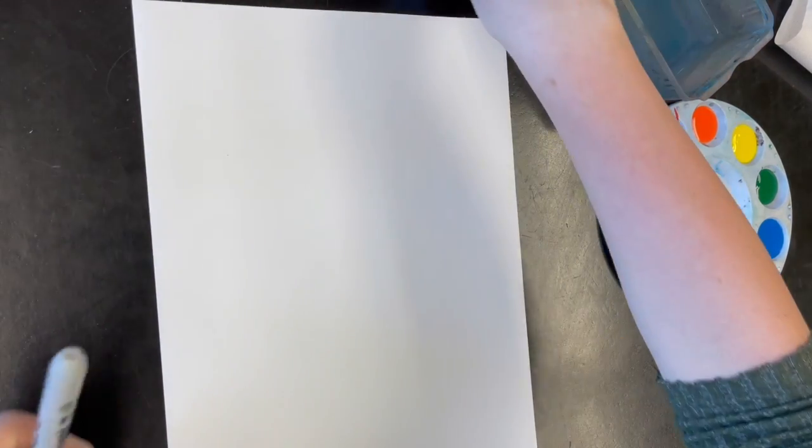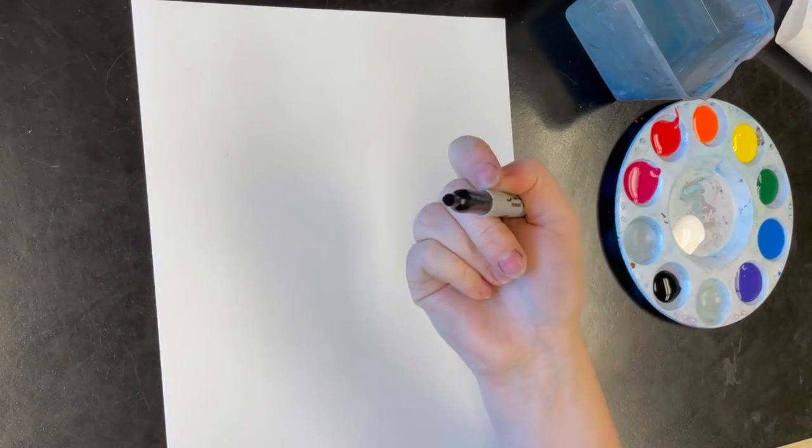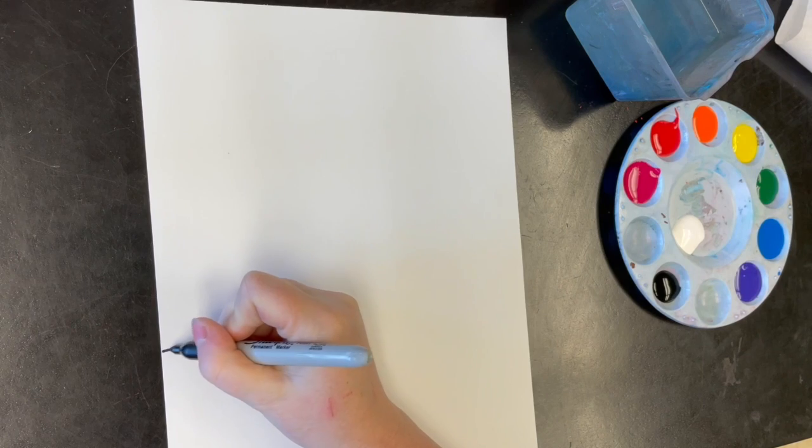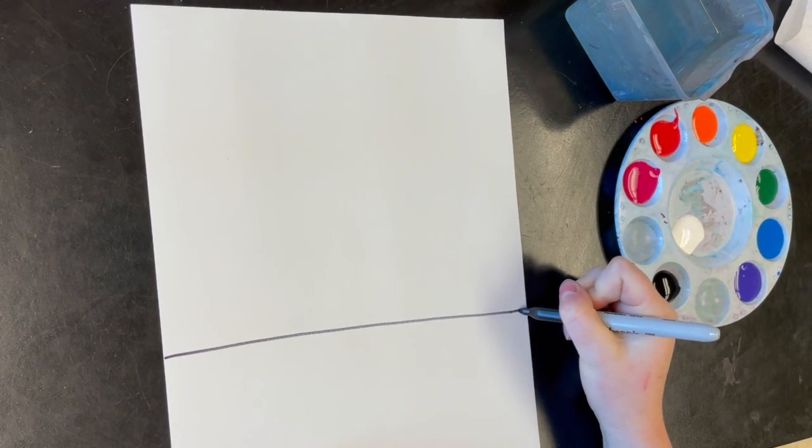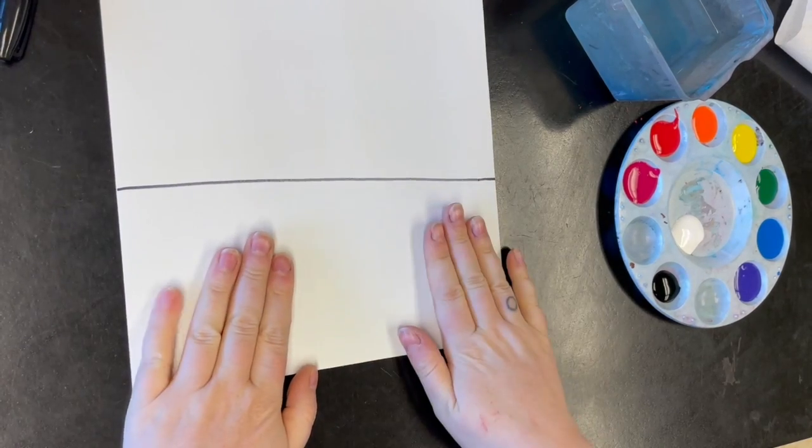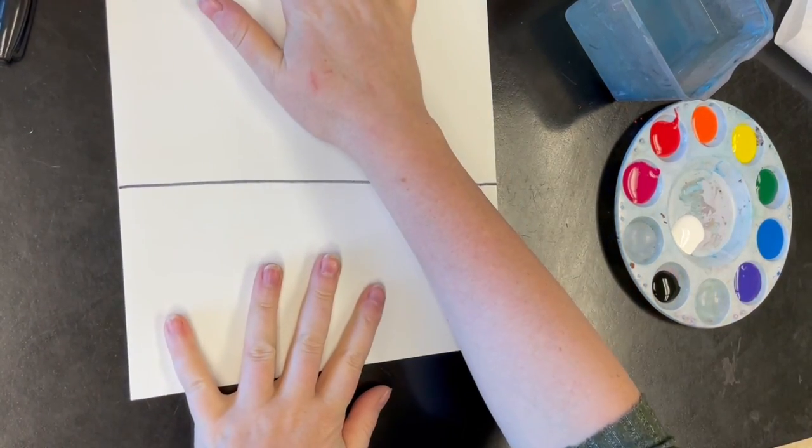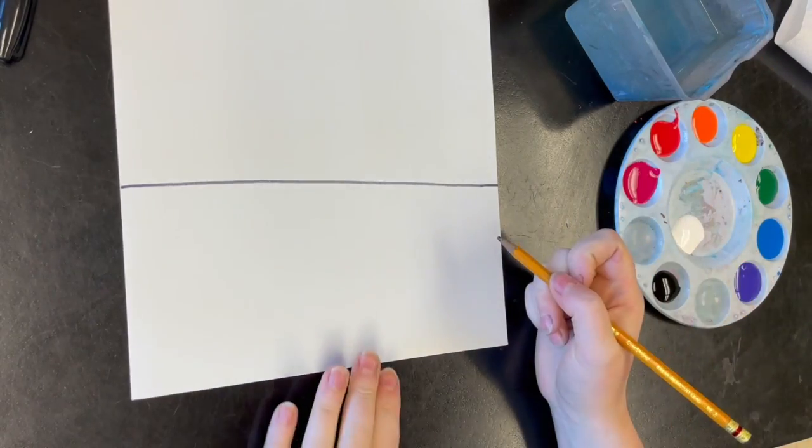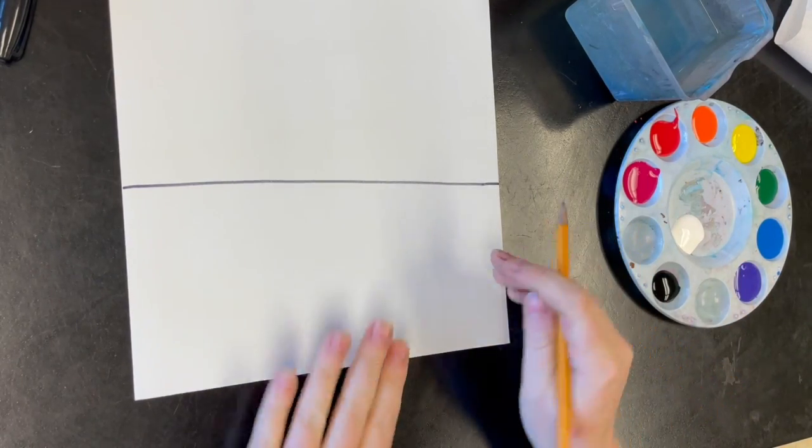For our hot cocoa cups we're going to start with the background. First you're going to use a Sharpie and draw a line straight across. Below the Sharpie line is going to be like the table where the cup sits, and above is the background. You need to pick some patterns to do—one pattern for the tabletop and one pattern for the background.